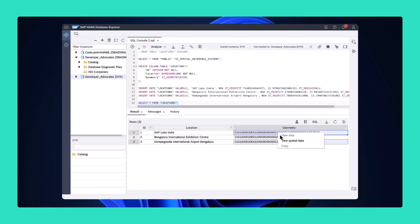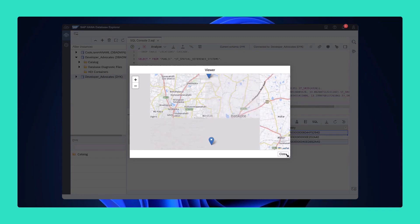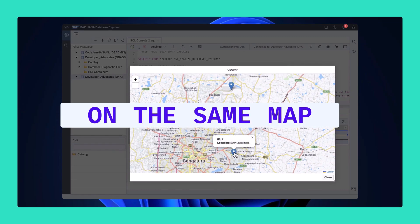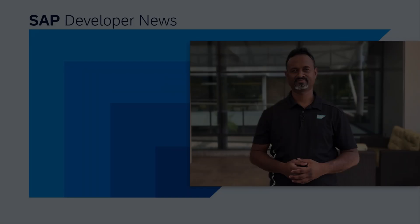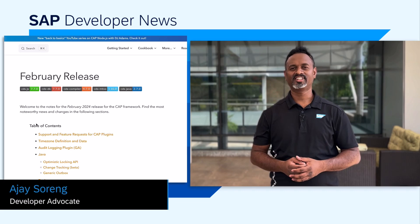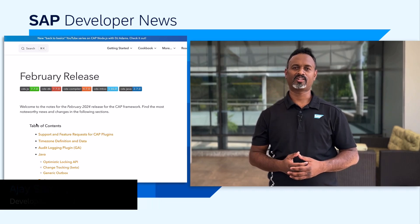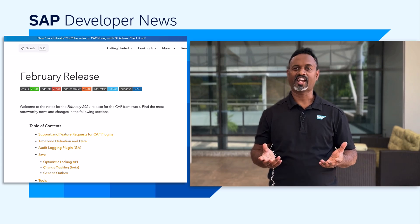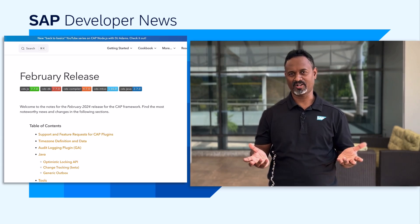Selecting cells in multiple rows will display all selected spatial data on the same map. Hello, everyone. The February release of Cloud Application Programming Model is now available. It is remarkable to see significant new features and capabilities getting added every month.